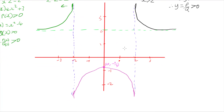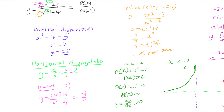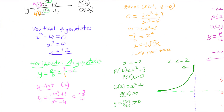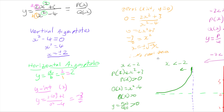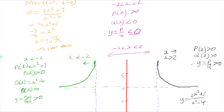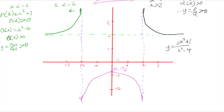So there we have it — the graph of y = (2x² + 3)/(x² - 4). The process involves finding vertical asymptotes where the denominator equals zero, finding horizontal asymptotes defined by the relationship between the two functions, finding the y-intercept, checking for any x-intercepts or zeros, and then analyzing what happens in each region between those asymptotes.